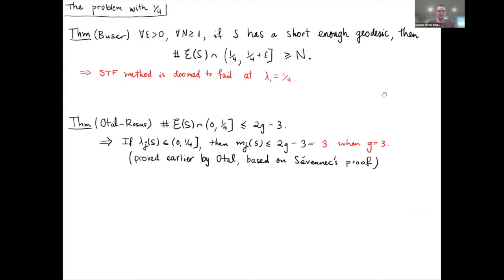Luckily there's already a better bound for eigenvalues at most one-quarter. The theorem of Otal and Rosa says that the number of eigenvalues in the interval (0, 1/4] — counting multiplicity — is at most 2g − 3. In particular, the multiplicity of any single eigenvalue in this interval is at most 2g − 3. In genus three this number comes out to three, which is less than eight, so the upper bound of eight holds for eigenvalues ≤ 1/4.